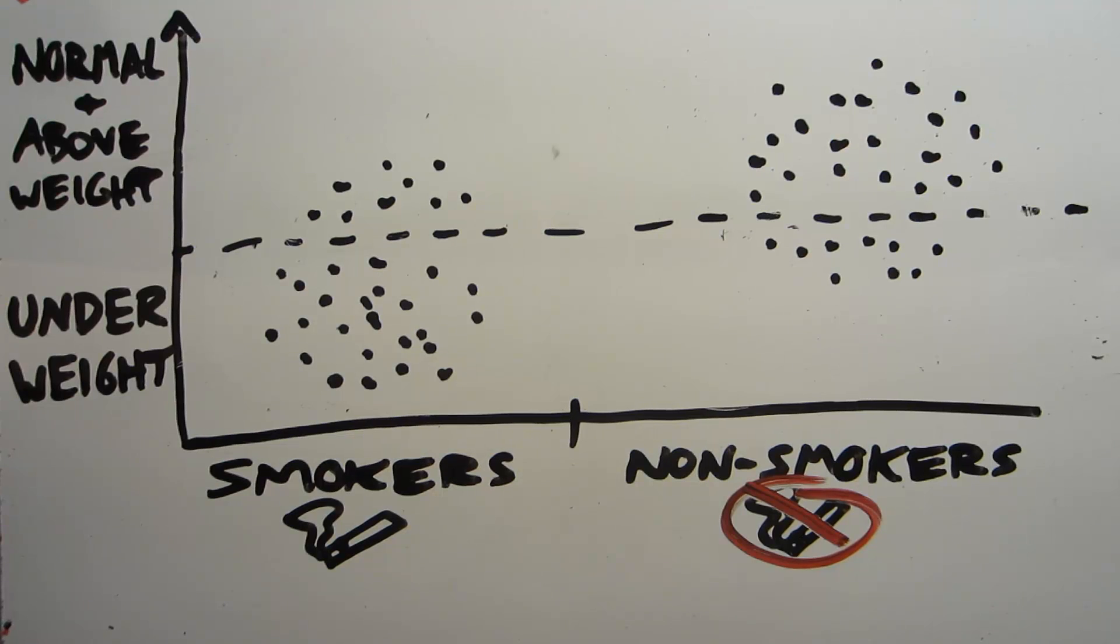So let's go back to the example with the babies. It turns out that what's happening here is that smokers very commonly have underweight babies, whereas non-smokers don't.